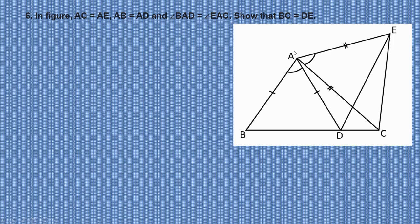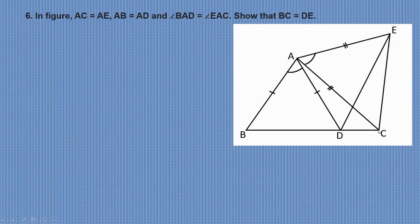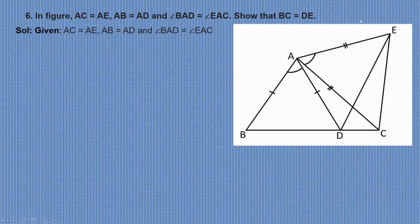In the given figure, AC equals AE, AB equals AD, and angle BAD equals angle EAC. We need to show that BC equals DE. Given: AC equals AE, AB equals AD, and angle BAD equals angle EAC.